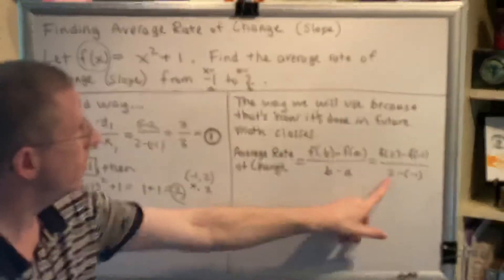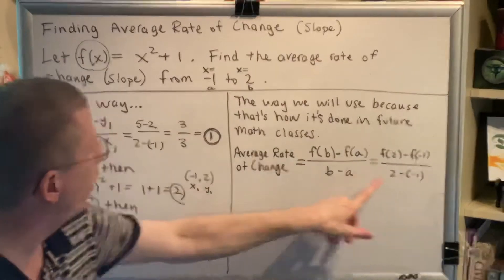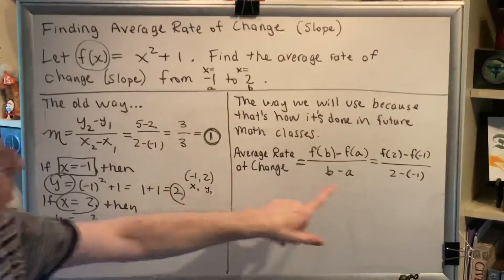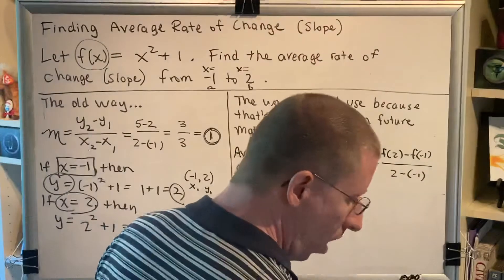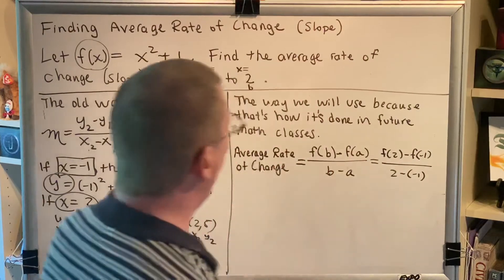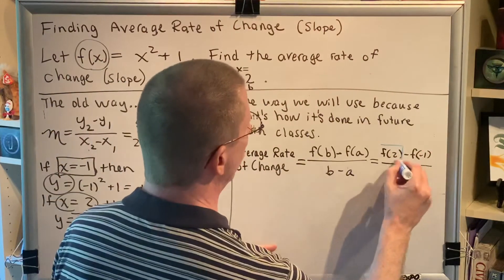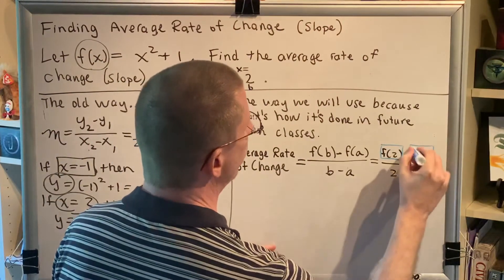Already, we're starting to see some similarities between the two methods. For example, the denominator here is already exactly the same. But what we do not yet know is what is f of 2 and what is f of negative 1.